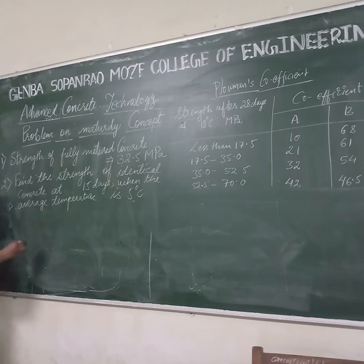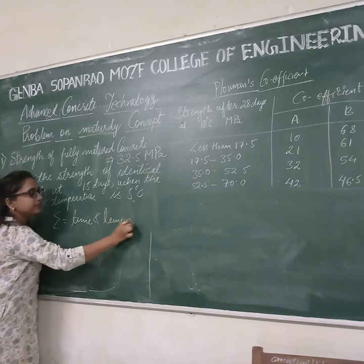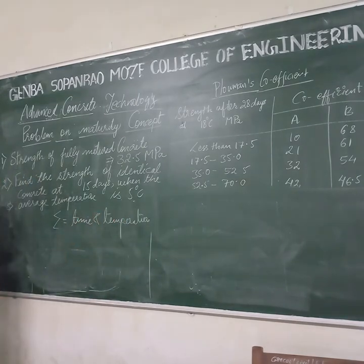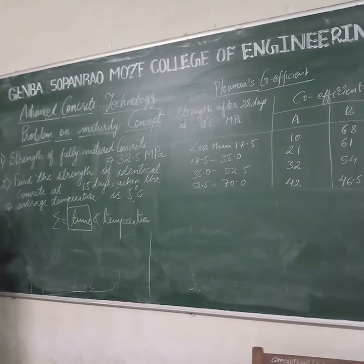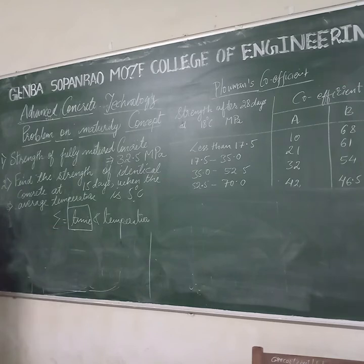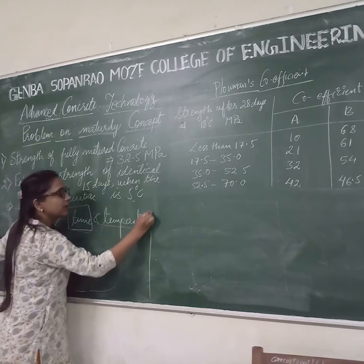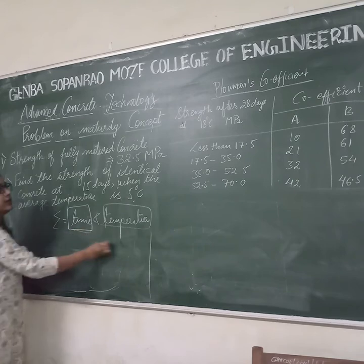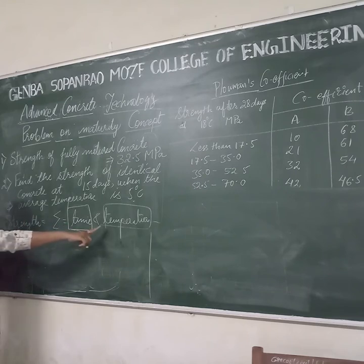Maturity concept is nothing but a relationship between time and temperature. From previous studies, it was mentioned that the strength of concrete depends only on time. But later on, when research was done on the maturity concept of concrete, it was seen that along with time, the maturity of concrete or strength of concrete depends on temperature as well. So the combined effect of temperature and time is known as maturity concept. Maturity means strength of concrete not only depends on time but also depends on temperature.